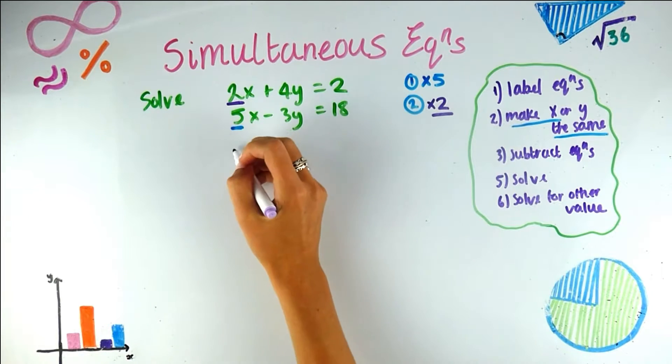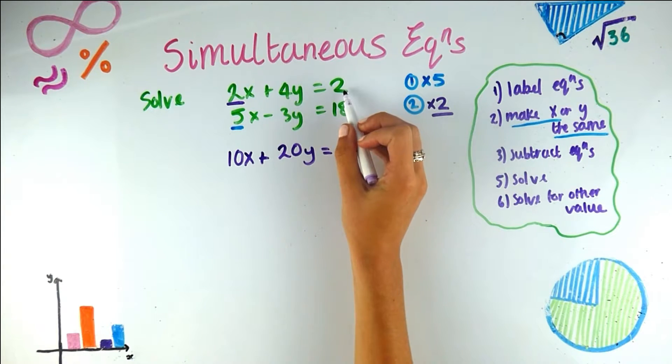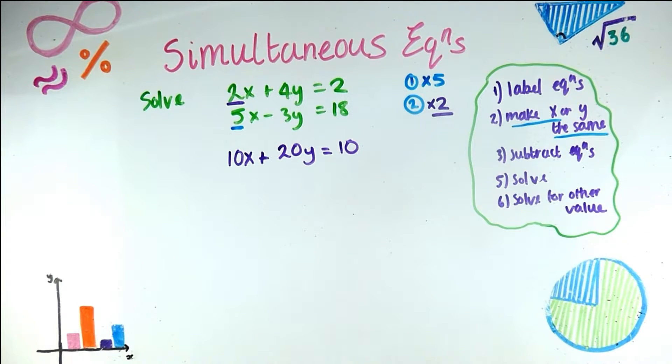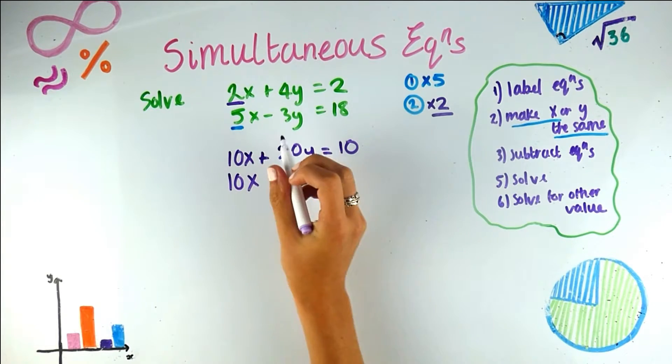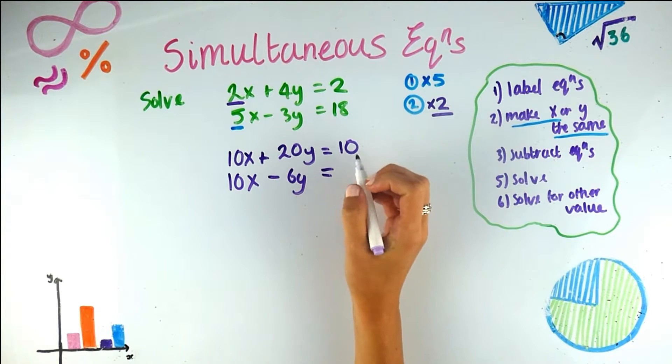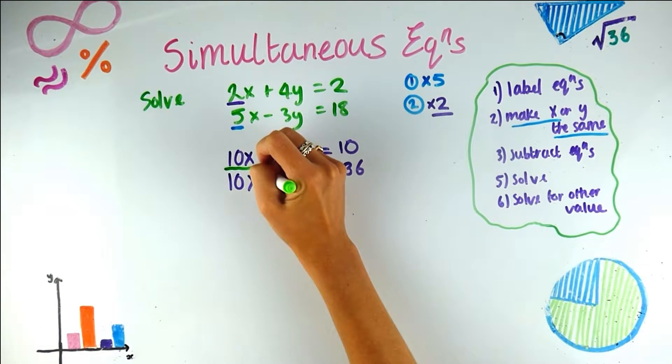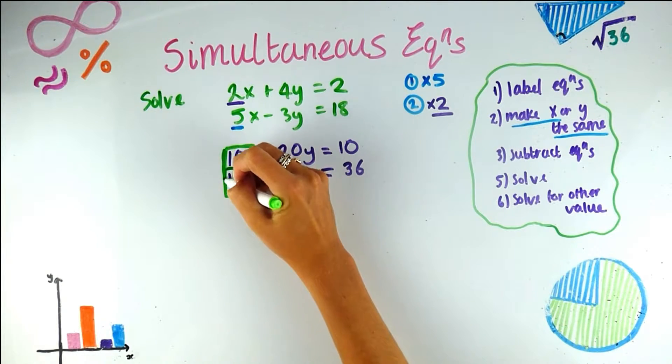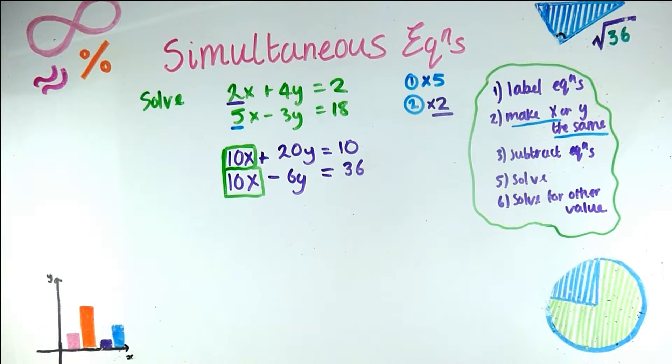So multiply equation 1 by 5. So 2 times 5 is 10x. 5 times 4y is 20y. And 2 times 5 is 10. And now we need to multiply equation 2 by 2. So 5 times 2 is 10, minus 3y times 2 is minus 6, and 18 times 2 is 36. And now we can see the reason for doing that is we make x the same. As you can see here, these two x's are the same, and that was the goal. So that's why we've done this. So step two done, make x the same.